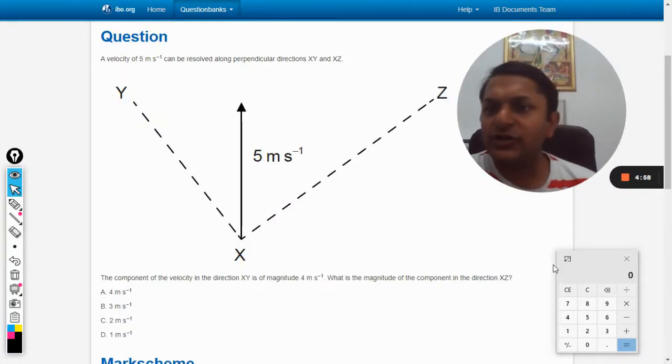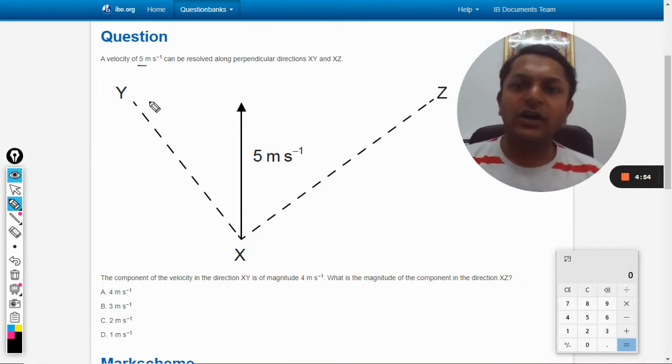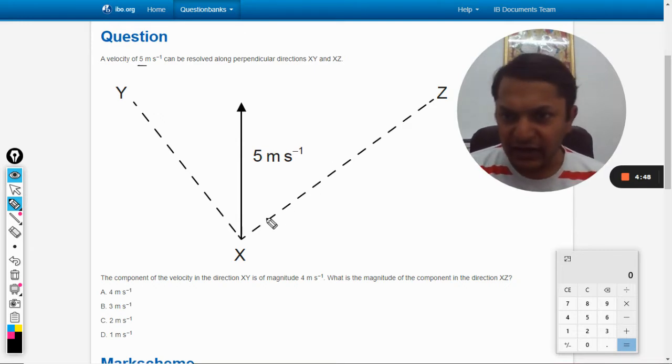In this question, a velocity of 5 meters per second can be resolved along perpendicular directions, that is XY and XZ as shown in the figure. Find the component of the velocity in the direction XY is of magnitude 4. What is the magnitude of the component in the direction of XZ?